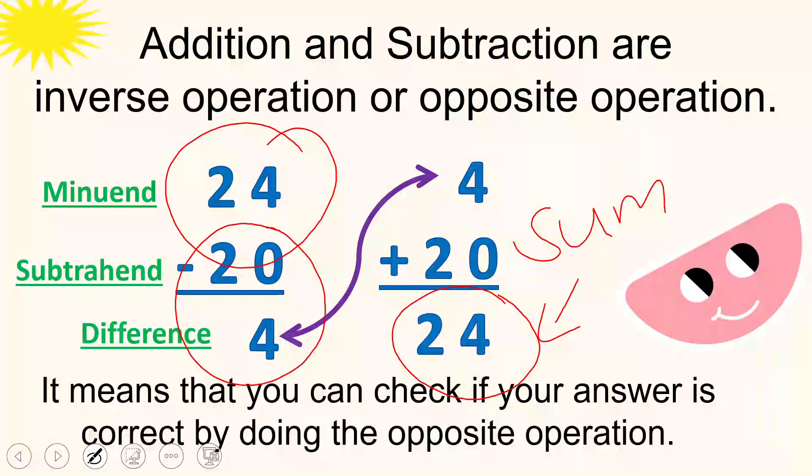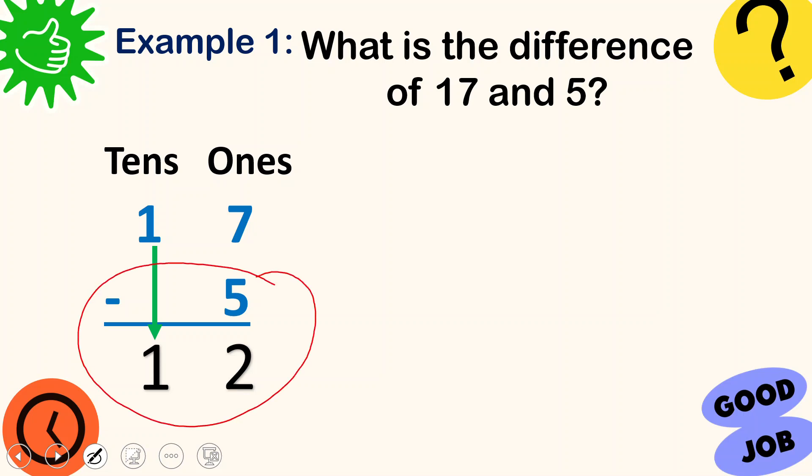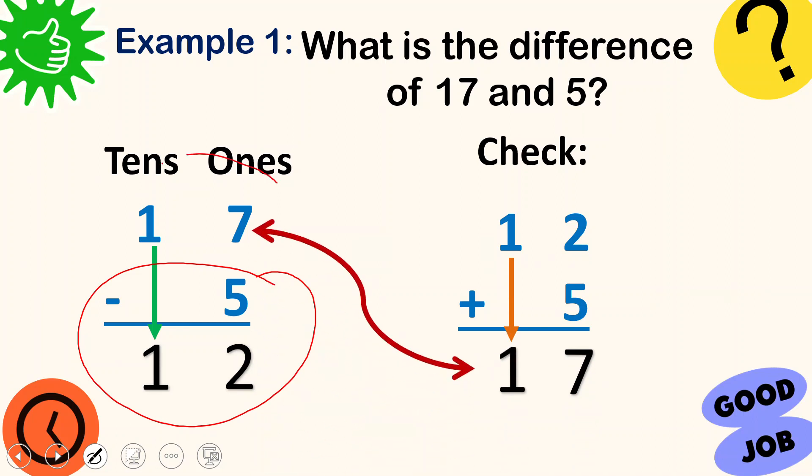Let's have more examples. Example number 1. What is the difference of 17 and 5? So 17 minus 5. Let's subtract the digit in the 1's place. 7 minus 5. Yes, it's 2. And 1 minus nothing? We will bring down 1. So the answer is 12. And then let's check. We will add these two numbers, the difference and the subtrahend. So we have 12 plus 5. 2 plus 5 is 7. And then bring down 1. See? 17 and 17. They are the same. That means your answer is correct.